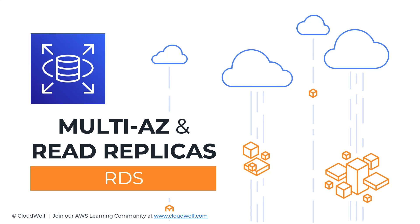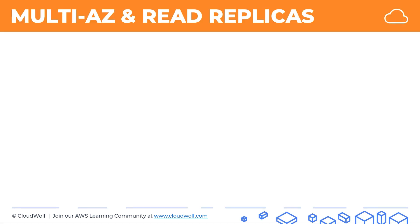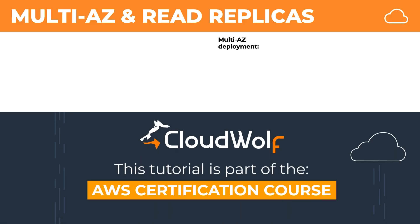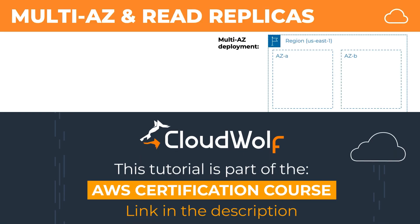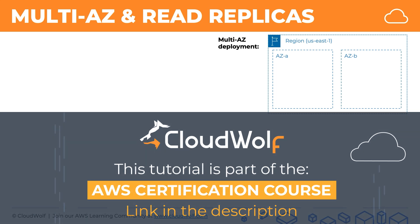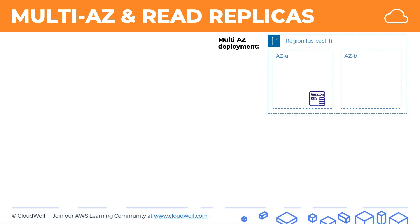Multi-AZ and read replicas are two deployment options for RDS. Let's have a look at how they differ. We're going to start with multi-AZ deployment. Let's say we have our region here and two availability zones, and we spin up our RDS database in one of them.